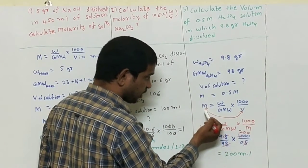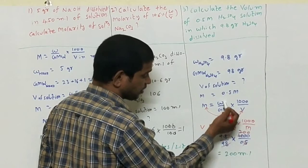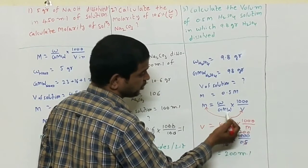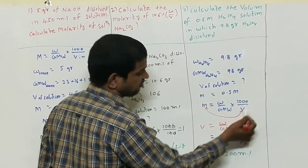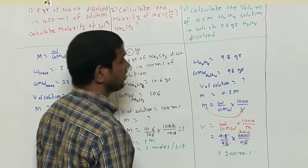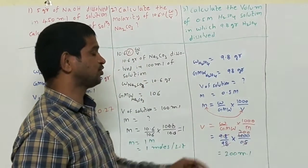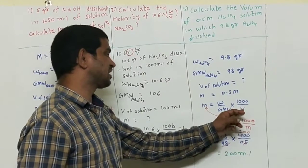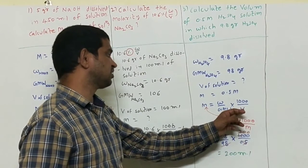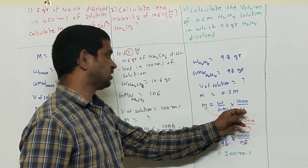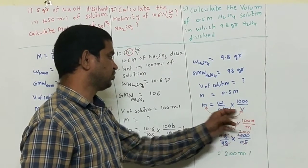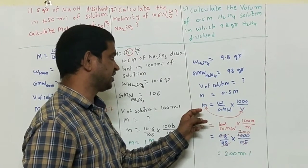I have written the formula: M equals w divided by GMW multiplied by 1000 divided by V. We have to calculate the volume of the solution, so I am rearranging the equation — taking V to this side and taking M to the denominator.